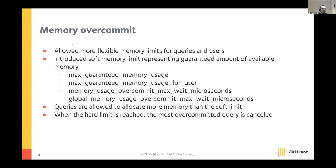The idea is: if a server has a terabyte of RAM and only one query is running, allow it to use that terabyte. If a second query then tries to allocate a few gigabytes, allow overcommit, and terminate the most over-committed queries when needed. This feature is currently experimental as there are ideas for further improvement.